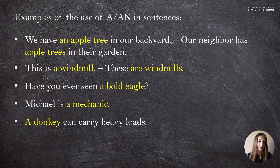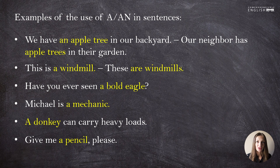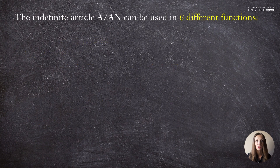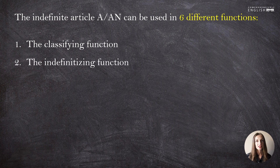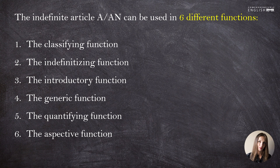And the last example: 'Give me a pencil, please' — any pencil. With the help of these examples I wanted to acquaint you with different cases in which nouns are used with the indefinite article. Now let's go through all six functions one by one: the classifying function, the indefinitizing function, the introductory function, the generic function, the quantifying function, and finally the aspective function.